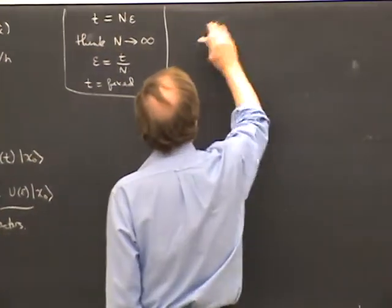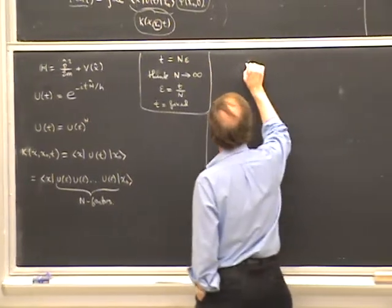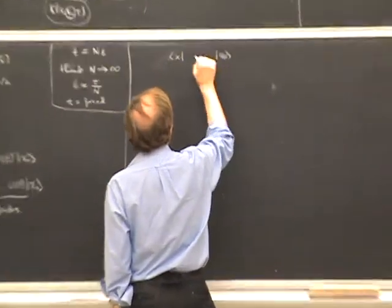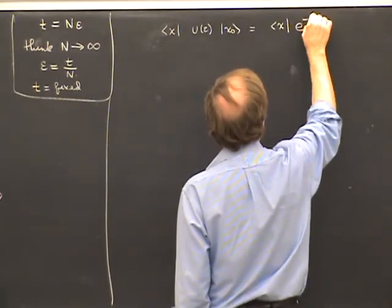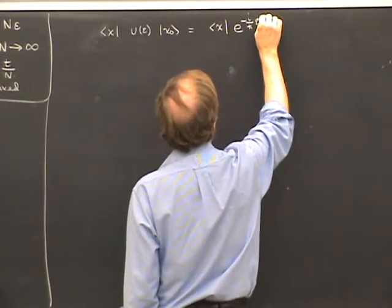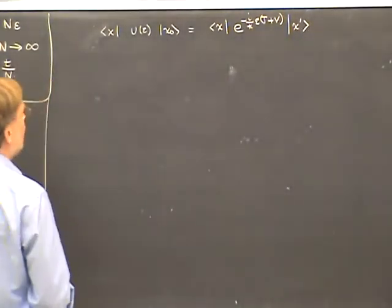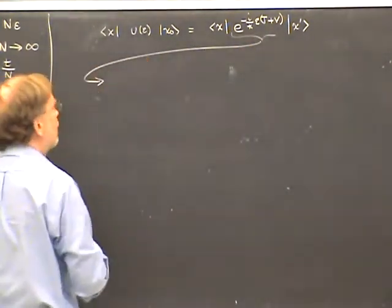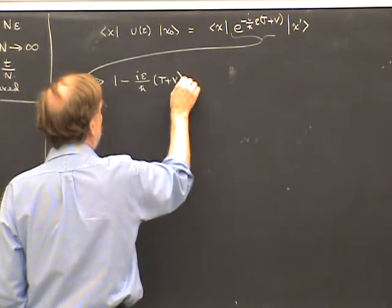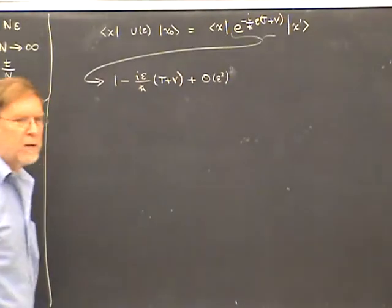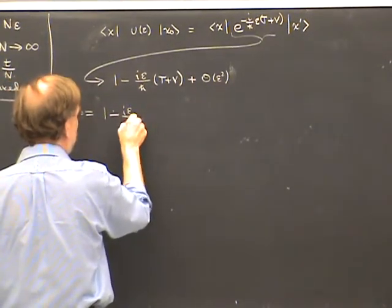The answer is yes. Let's take the propagator between two points X and X′ for the small time U(epsilon). This is the matrix element ⟨X|e to the minus iε over ℏ times (kinetic energy plus potential energy)|X′⟩. For small epsilon, we expand in a Taylor series: it's 1 minus iε over ℏ times (T plus V) plus order epsilon squared. This can also be written as the product of [1 minus iε/ℏ times T plus higher order] times [1 minus iε/ℏ times V plus higher order] — these two series agree to order epsilon.